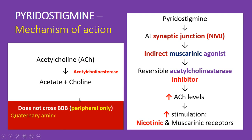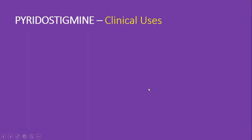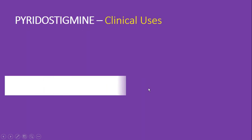Since pyridostigmine is a quaternary amine, it does not cross the blood-brain barrier and has no CNS function. It acts predominantly peripherally, especially on peripheral skeletal muscles. This is similar to neostigmine, which is also a quaternary amine that does not cross the blood-brain barrier.